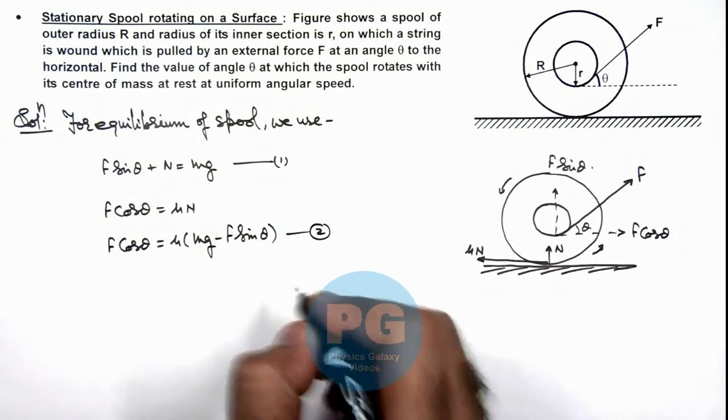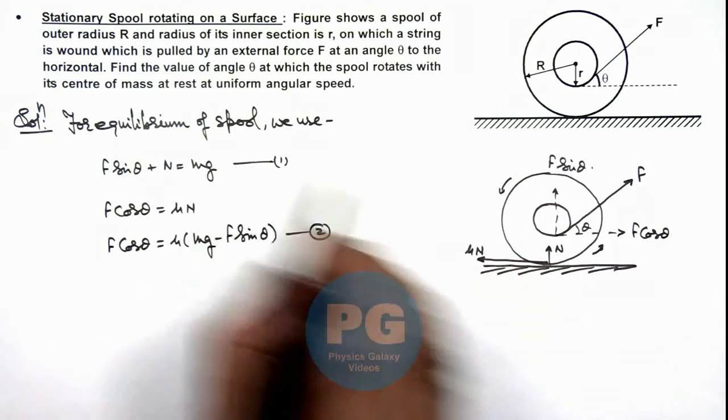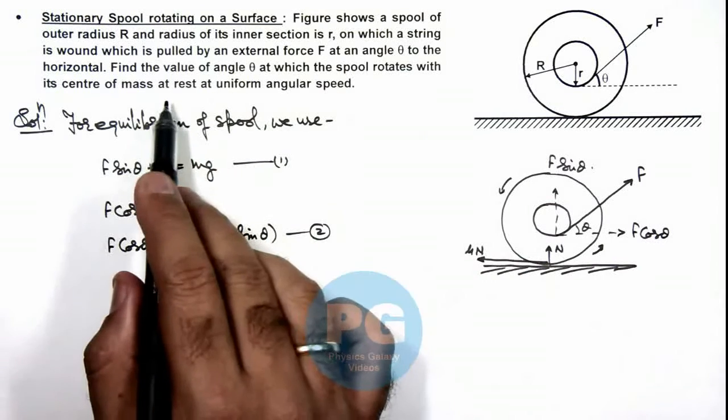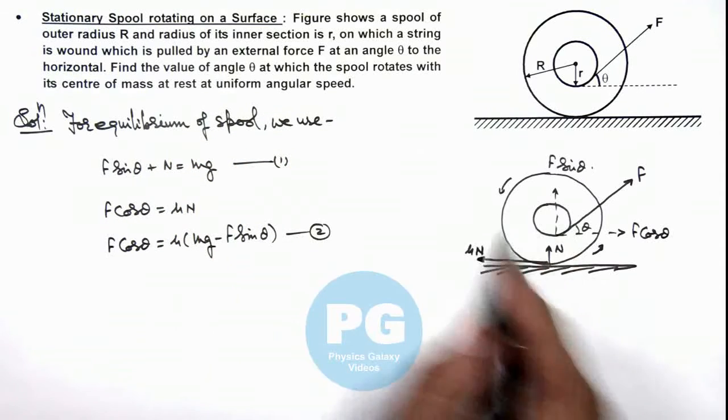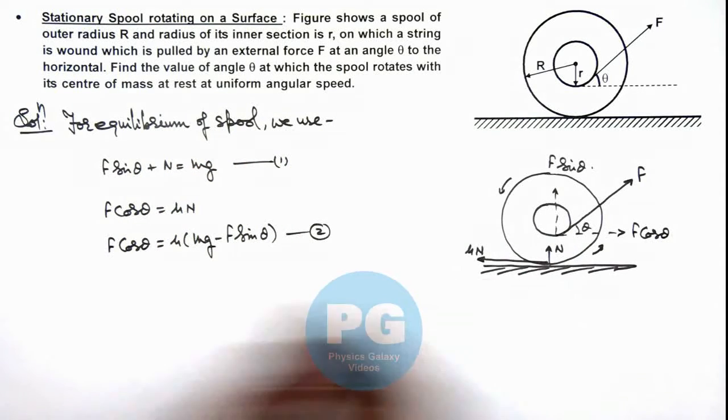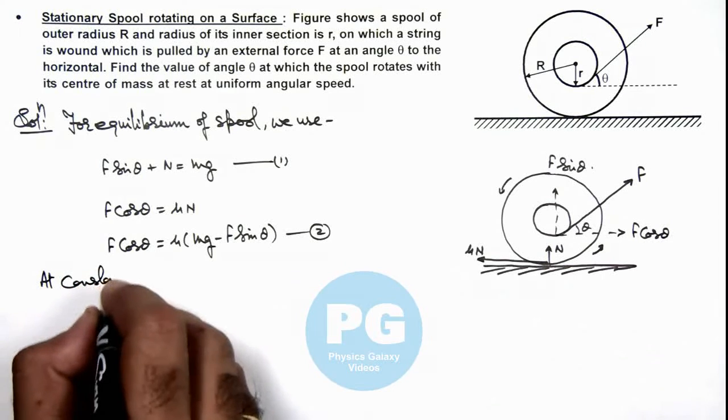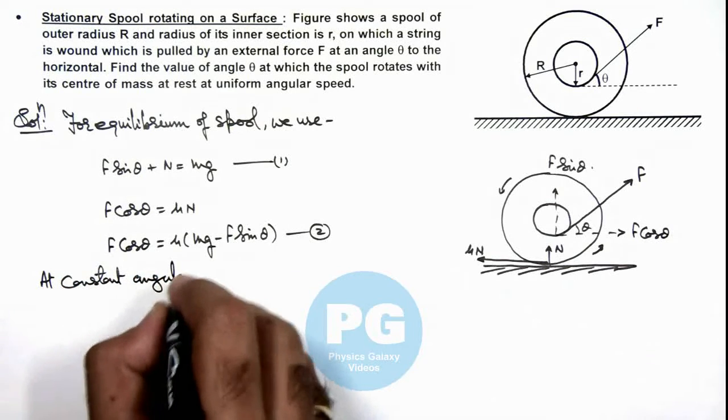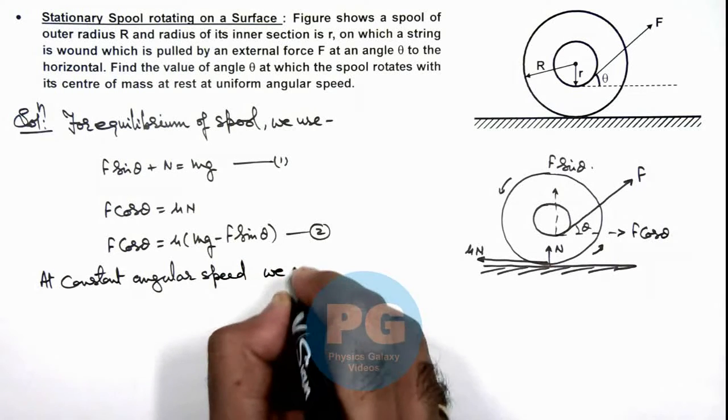And if we talk about its rotation, here we are given that the spool rotates at uniform angular speed, that means net torque must be equal to zero on it. So at constant omega, at constant angular speed we use.